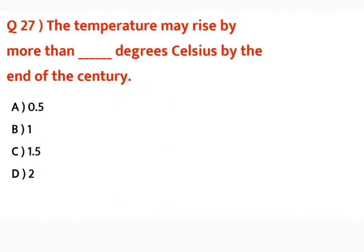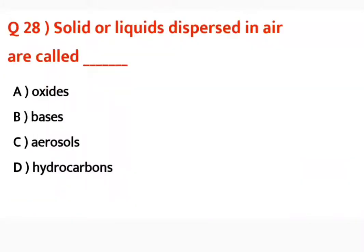Question number twenty-seven: The temperature may rise by more than dash degrees Celsius by the end of the century. The correct answer is two — the temperature will increase by two degrees Celsius by the end of this century.